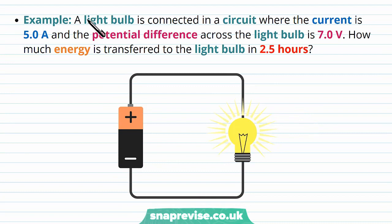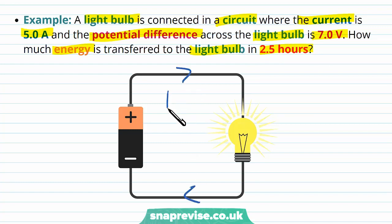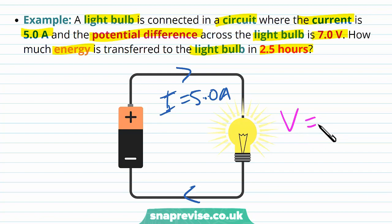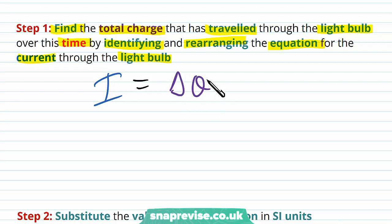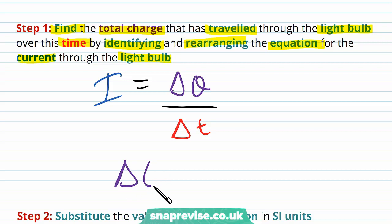A light bulb is connected in a circuit where the current is 5 amps and the potential difference across the light bulb is 7 volts. How much energy is transferred to the light bulb in 2.5 hours? Our first step is to find the total charge that has travelled through the light bulb over this time. We know that current equals charge divided by time — since current is the rate of flow of charge — so we can find the total charge by multiplying the current by the time taken: Q = I × Δt.